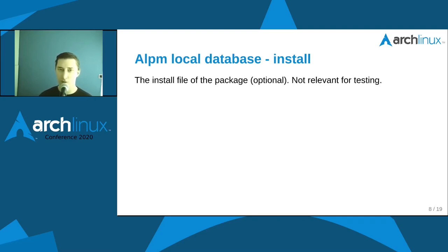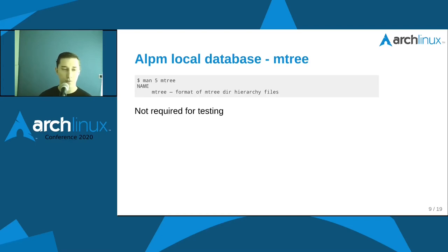Then there's the install file — the install script you specify with the install directive in a package build. This is not really relevant for testing as of now since I'm not testing any installs or upgrades. Then there's the mtree file, which contains a description of the package archive. For example, if you take the Linux package and open it — it's a GZIP archive — you'll see a tree of the package with hashes of the files and permissions. This is essentially an archive format.